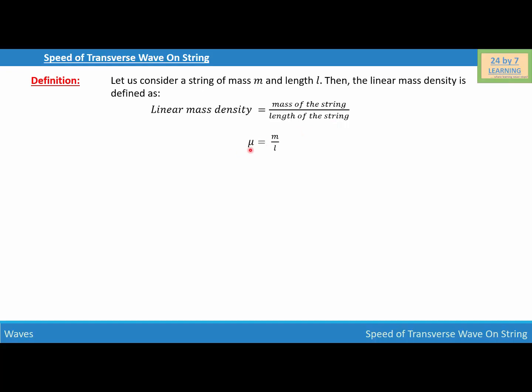So mu equals m over l, where mu is the linear mass density, m is the mass of the string, and l is the length of the string.